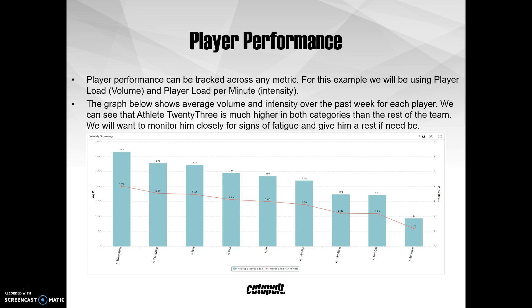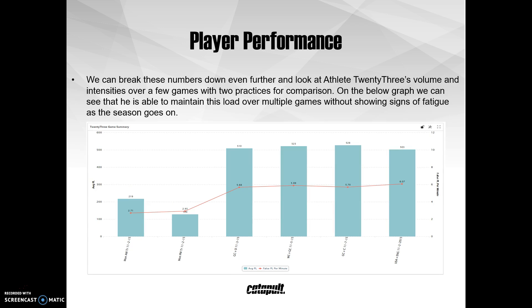Now that we have a solid understanding of what each metric can tell us, we can use them to start answering specific questions. On the graph below, we have the average player load and player load per minute for each of our athletes over the past week. We can use this to see if anyone is standing out or falling behind compared to the rest of the team. Glancing at this graph, we can see that Athlete 23 has significantly higher average player load and player load per minute values. What we want to determine is whether this athlete has higher numbers because he is functioning at a higher level than the rest of the team, or if he is overworking himself and headed toward an injury. One way to make this determination is to see whether this athlete can maintain that high level of output over a long period of time. Graphing Athlete 23's average player load over several games with practices for comparison, we can see that he maintains a high output over the course of the season without any signs of slowing down.